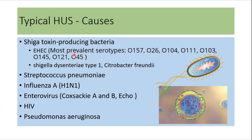Similarly, other than E. coli, Shigella dysenteriae type 1 and Citrobacter freundii are also responsible for HUS. Moreover, Streptococcus pneumoniae, influenza A, enterovirus, HIV, and Pseudomonas aeruginosa are also causes of post-infectious hemolytic uremic syndrome.